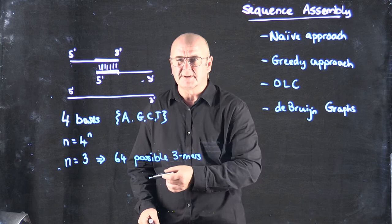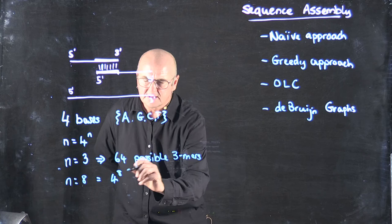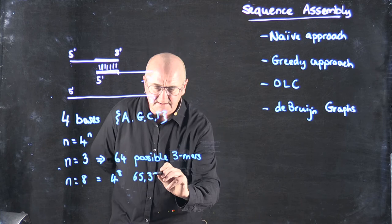When n is 8, there's 4 to the 8 possibilities of finding that sequence. So we would expect to find an 8-mer sequence about once every 65,336 bases.